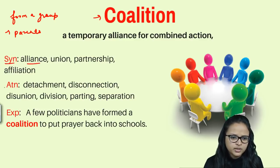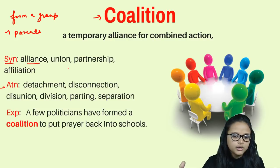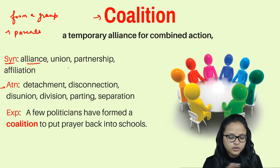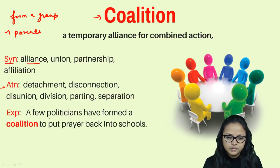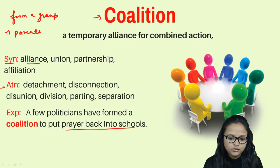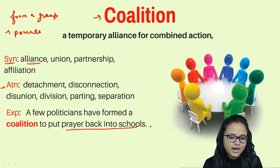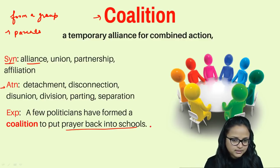Unlike political parties that continue for years, a coalition is temporary. Synonyms of coalition are alliance, union, and partnership. Antonyms are detachment — because when you are in a coalition you are attached to others — disconnection, disunion, and division. For example: 'A new group of politicians have formed a coalition to put prayers back into schools,' meaning the politicians have joined hands to make that request.